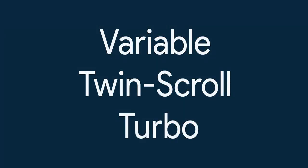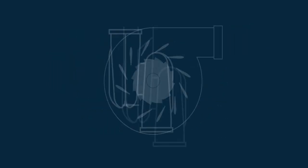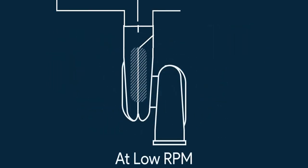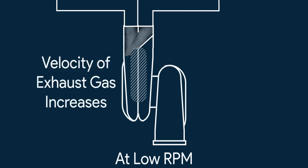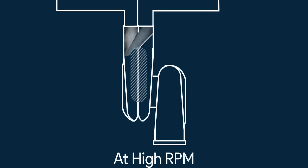Next is variable twin scroll turbo. It is a combination of variable geometry turbo with a twin scroll setup. At low engine revs, one of the scrolls is completely closed, forcing all the air into the other one. As all the air has to travel through a narrower path, the velocity of the gases increases, spinning the turbo faster. This results in good response even at low RPM. Then, as the engine revs up, a valve gradually opens to allow exhaust gas into the other scroll, giving a good high-end response as well.